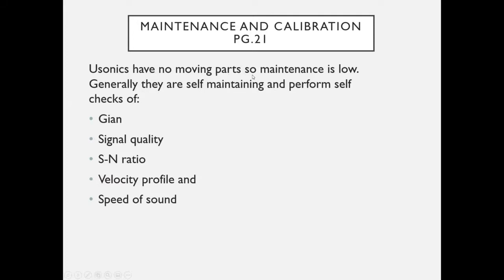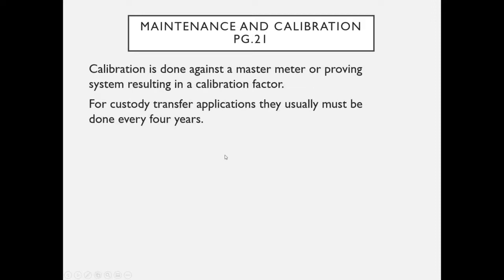Ultrasonic meters have no moving parts, so maintenance is relatively low. They are generally self-maintaining and capable of self-checks including signal gain, signal quality, signal-to-noise ratio, velocity profile, and speed of sound verification. Calibration is performed against a master meter or approved system, resulting in a calibration factor input into the transmitter. For custody transfer applications, calibration is typically required every four years, depending on application circumstances and applicable standards.